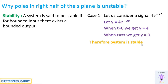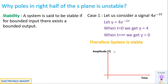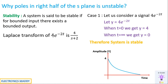Since y has finite amplitudes at both t=0 and t=∞, we can say the system is stable. We check only these two points because t=0 is the minimum and t=∞ is the maximum for any system. Now let us plot this signal: at t=0 the amplitude is 4, and it is an exponentially decaying signal that approaches 0 as t→∞.